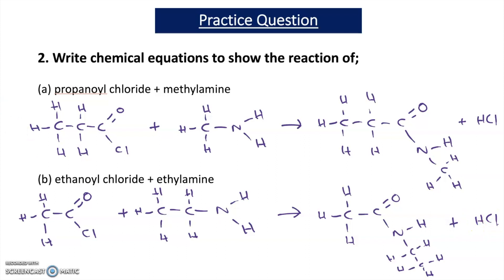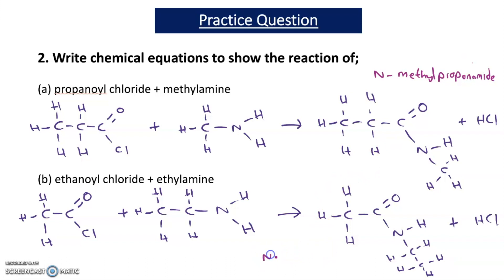If asked to name these substituted amides: the first is N-methyl propanamide, because there's a methyl group attached to the nitrogen. The second is N-ethyl ethanamide, because there's an ethyl group attached to the nitrogen.